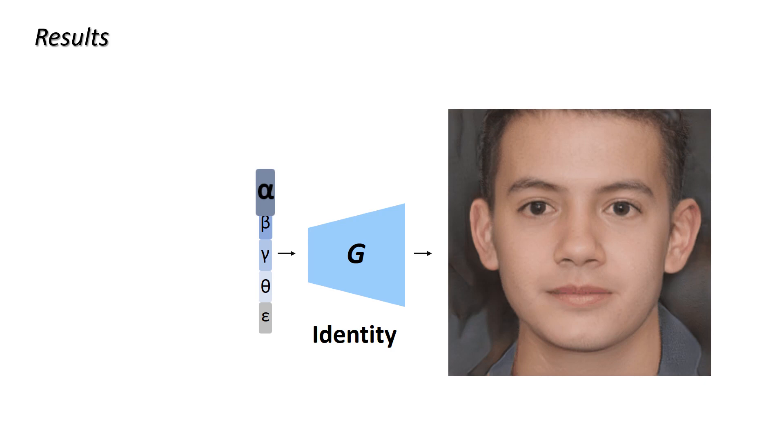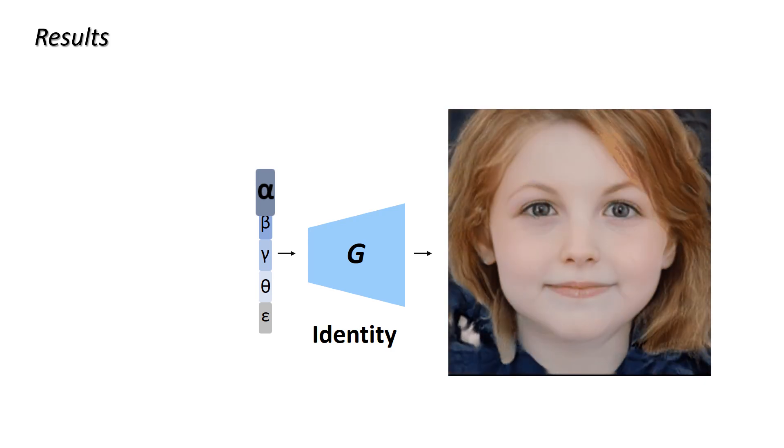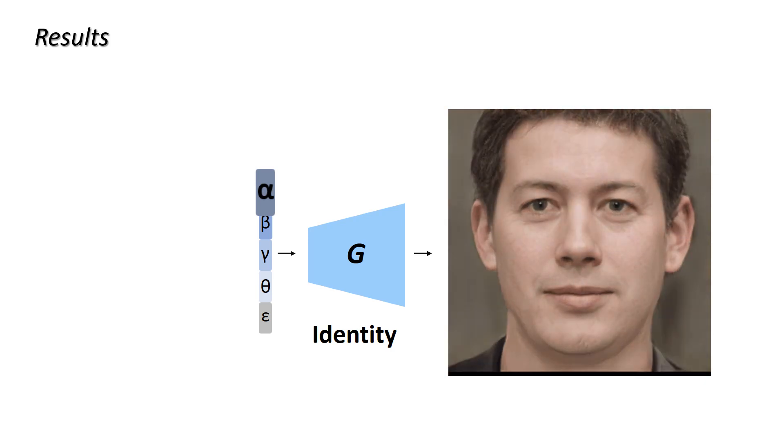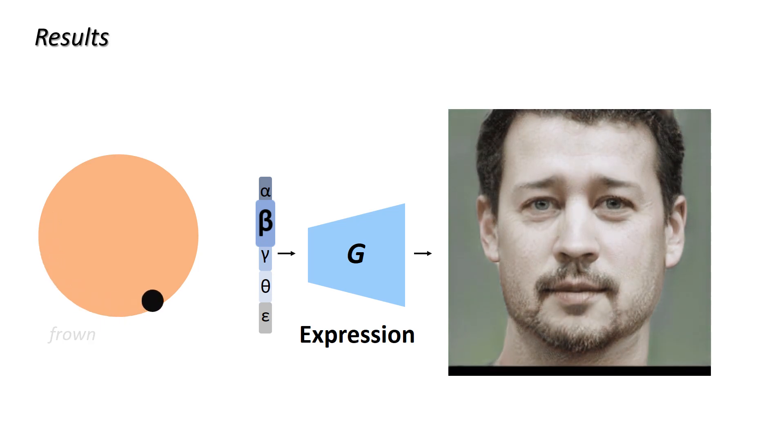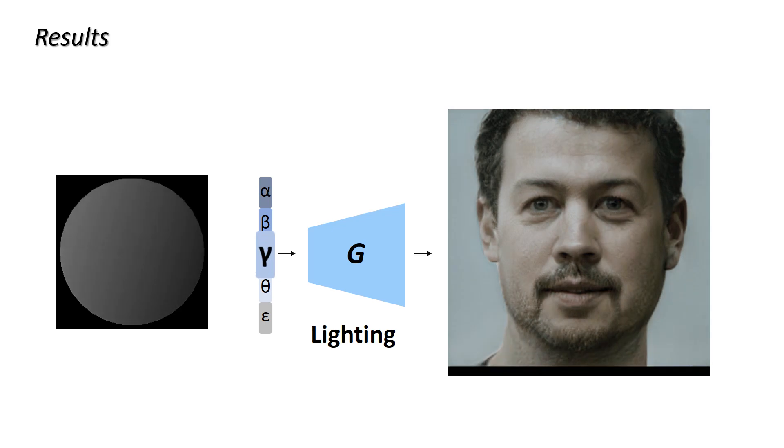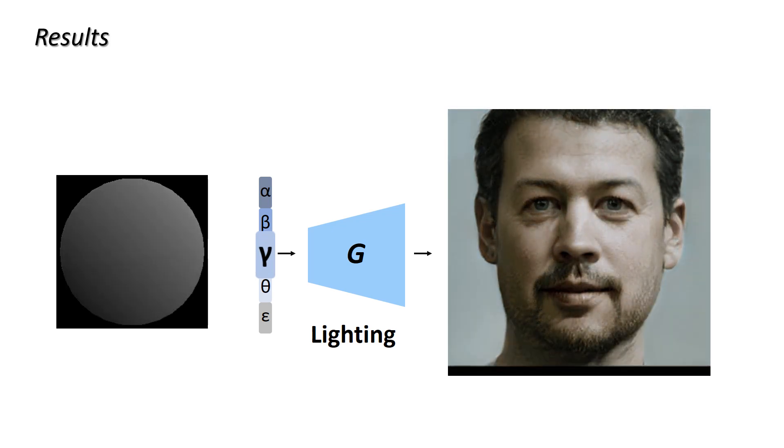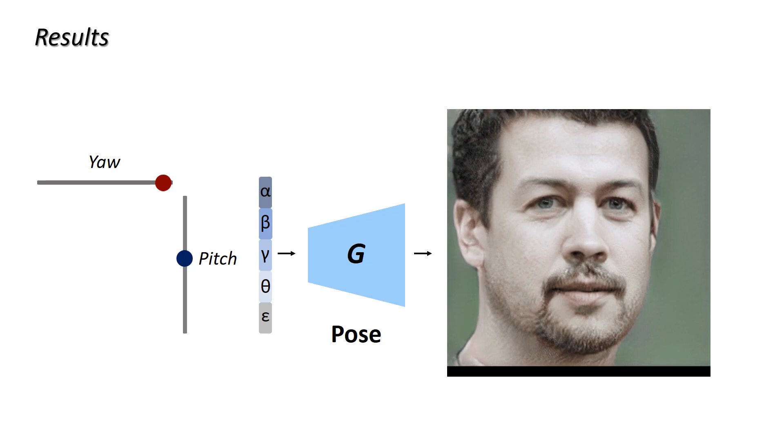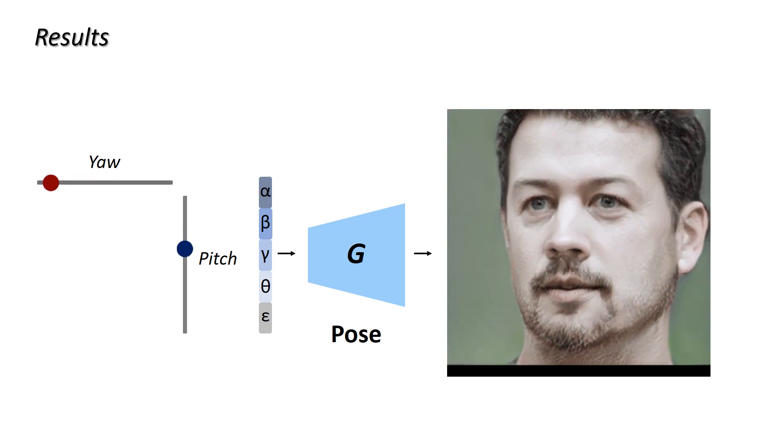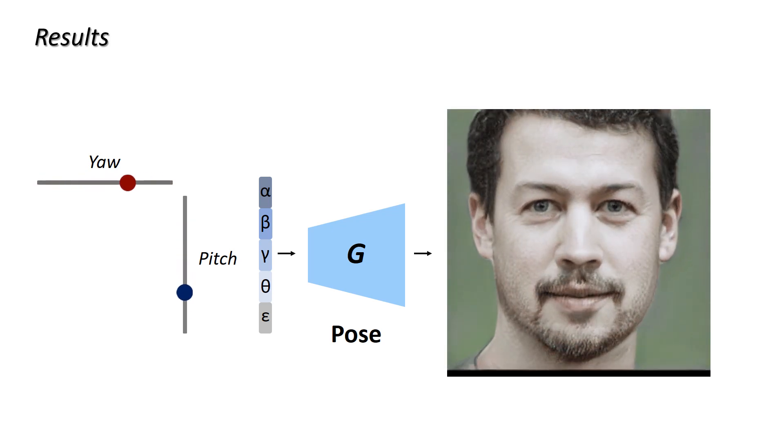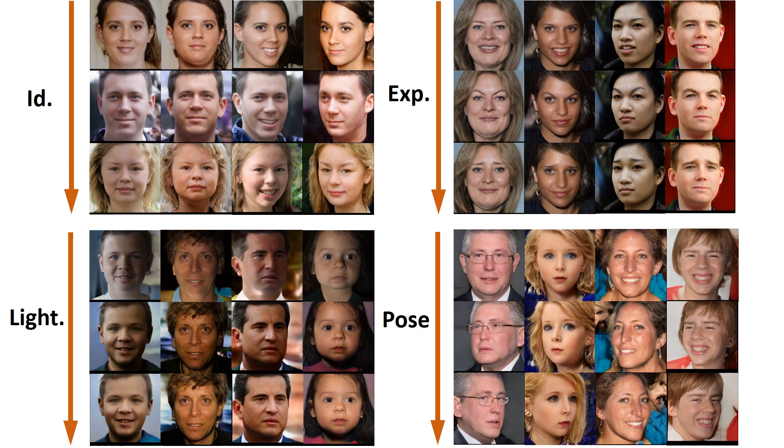We test our method with a StyleGAN structure and train it on the FFHQ dataset. After training, we can freely change the four factors, including identity, detailed facial expression, lighting intensity and direction, and the desired pose angles. The factor variations are highly disentangled. Changing one factor does not affect others, as shown in the figure.